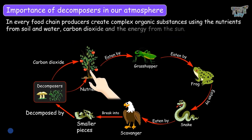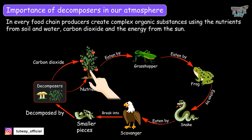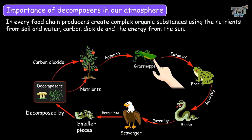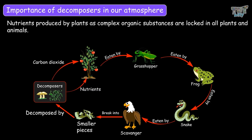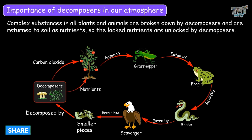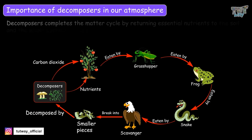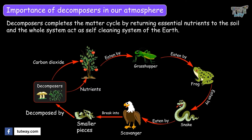In every food chain, producers create complex organic substances using nutrients from the soil, water, carbon dioxide, and energy from the sun. Those organic substances are taken as food by herbivores, and herbivores are also taken as food by omnivores and carnivores. So nutrients produced by plants as complex organic substances are locked in all plants and animals. These complex substances are broken down by decomposers, who then return them to the soil as nutrients — unlocking the locked nutrients from dead remains. So the decomposers complete the matter cycle by returning essential nutrients to the soil, and the whole system acts as a self-cleaning system of the earth.